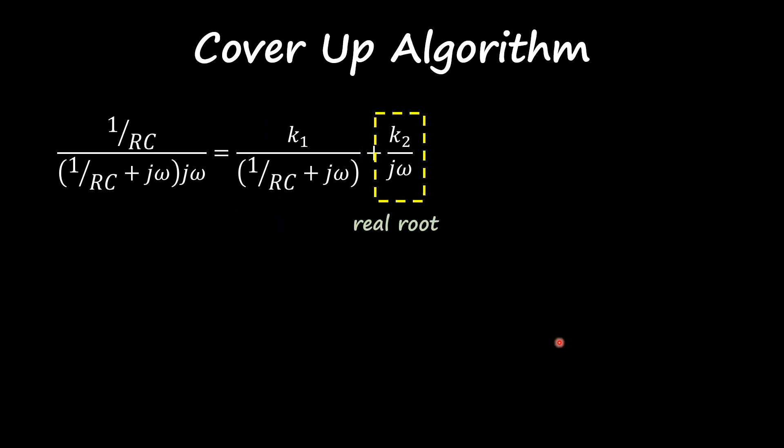For k2, which is also a real root, we also apply the cover-up algorithm. Now we are multiplying my transfer function by j omega, so the j omega cancels out. I'm going to find the answer for that pole, so j omega equal to zero. If I substitute j omega by zero, I get one.